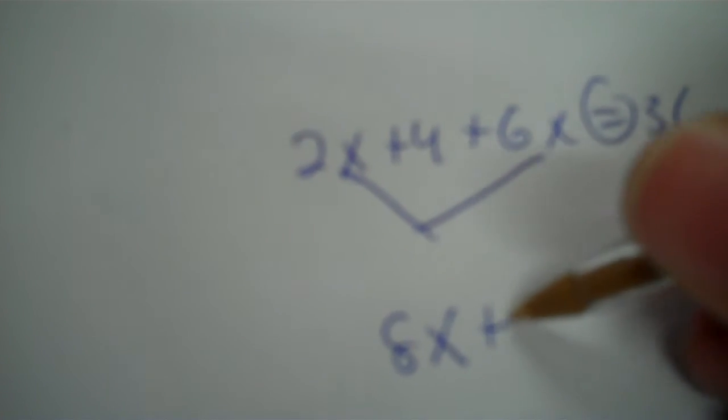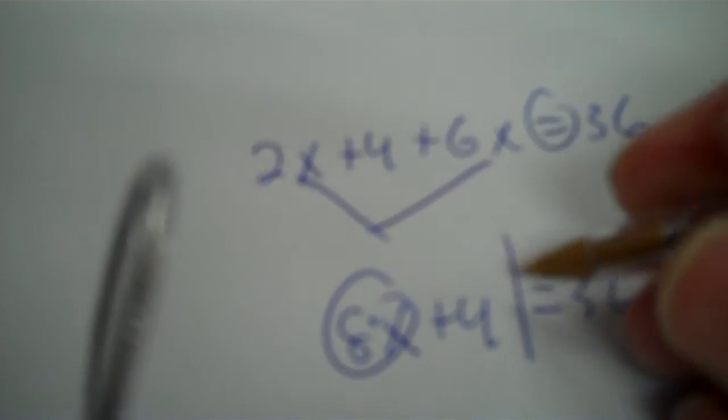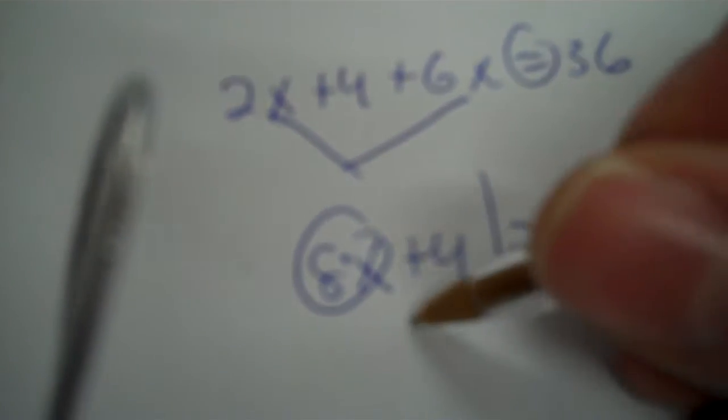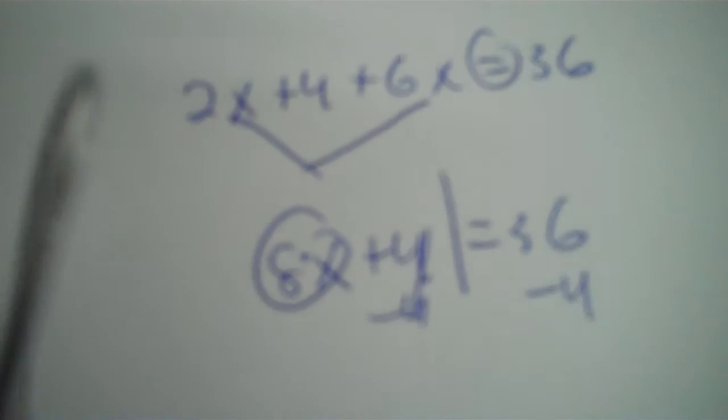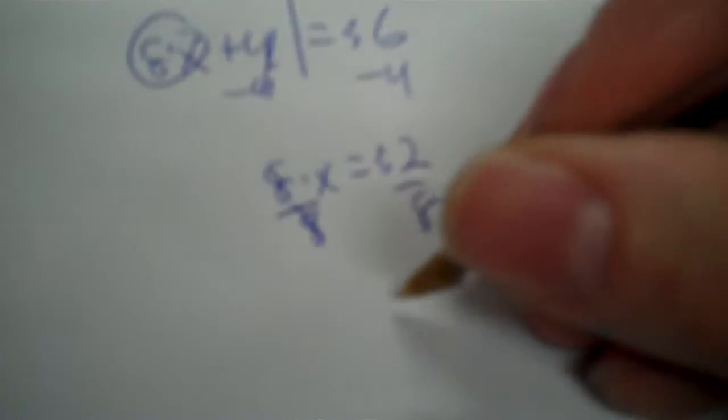So then what I do is I combine my like terms, and that's eight X. And then pretty easy, you just times eight, eight times X plus four. So you minus your four, you get 32. Then you divide by eight, and you get four. Now you need to go up in this table, in these two unknowns, and put four and four.